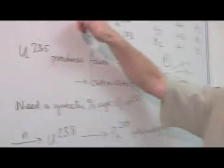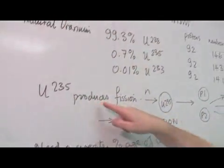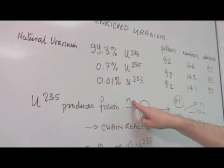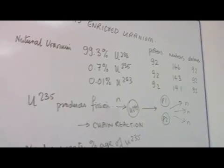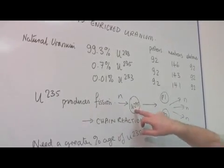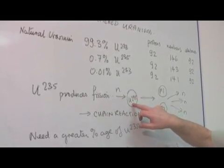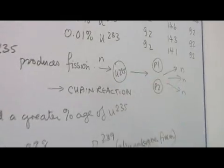Uranium-235 is different from uranium-238 in the way it behaves when it is hit by a neutron. Here, a neutron hitting uranium-235 atom can produce what we call fission.